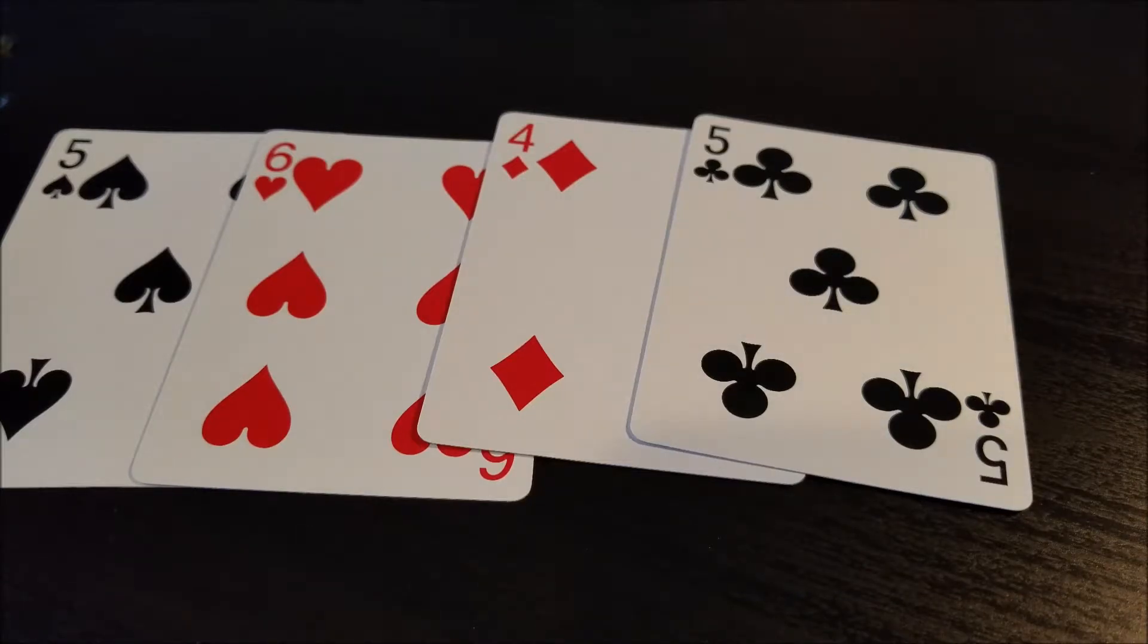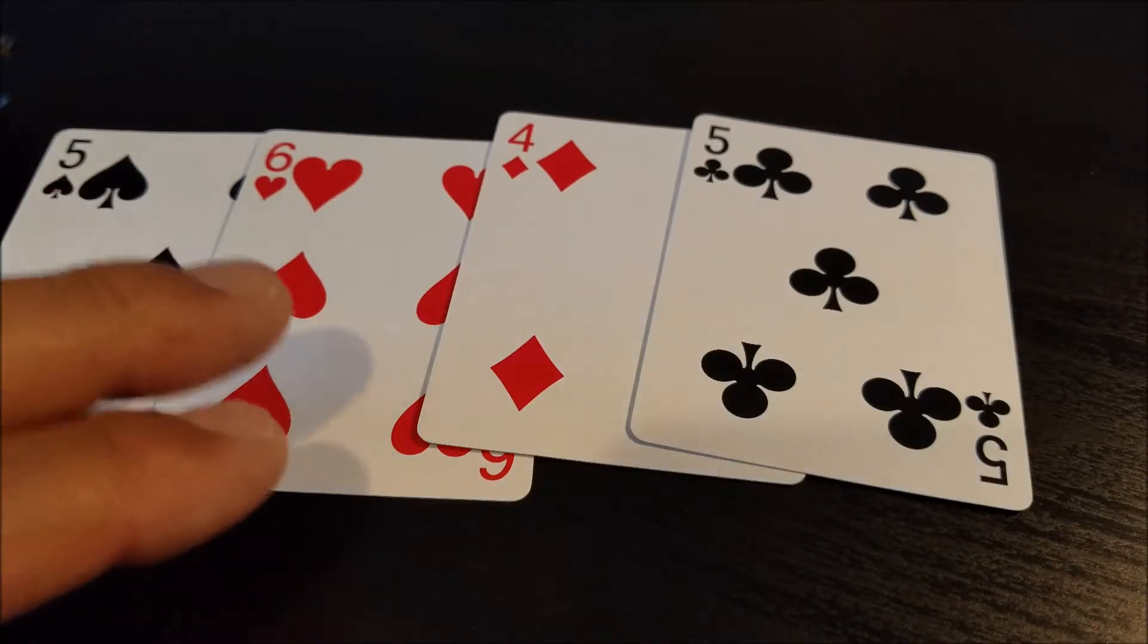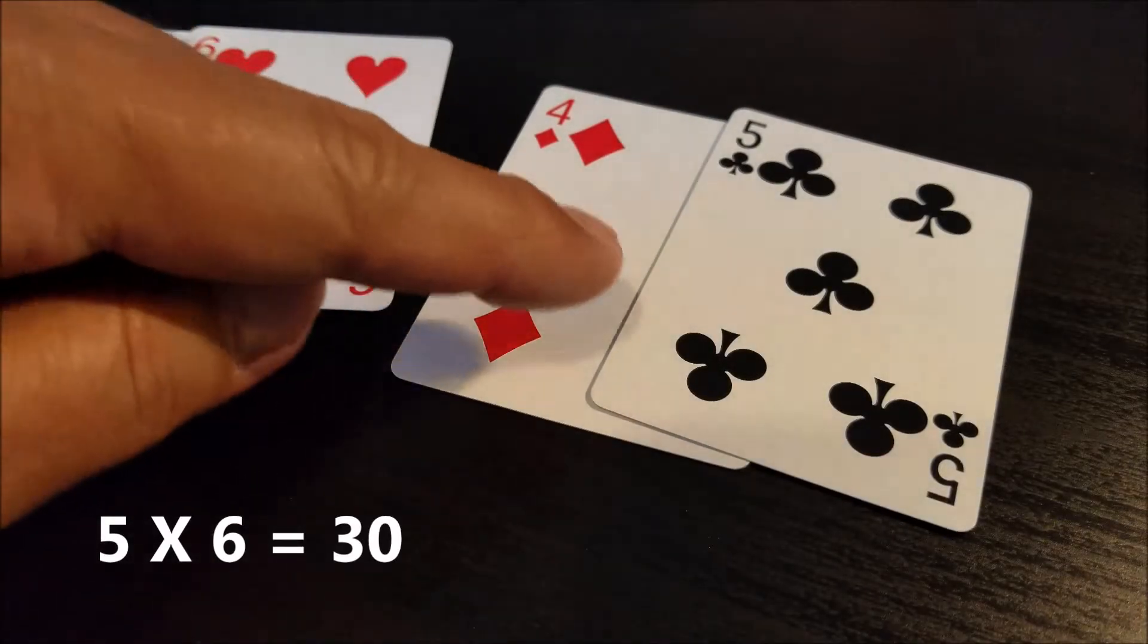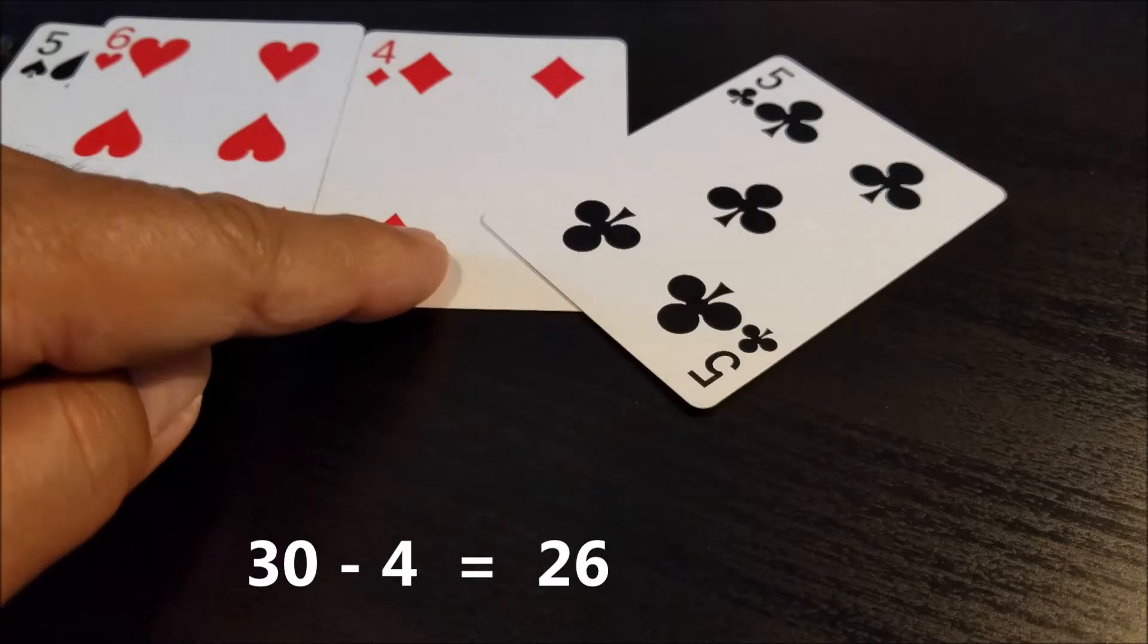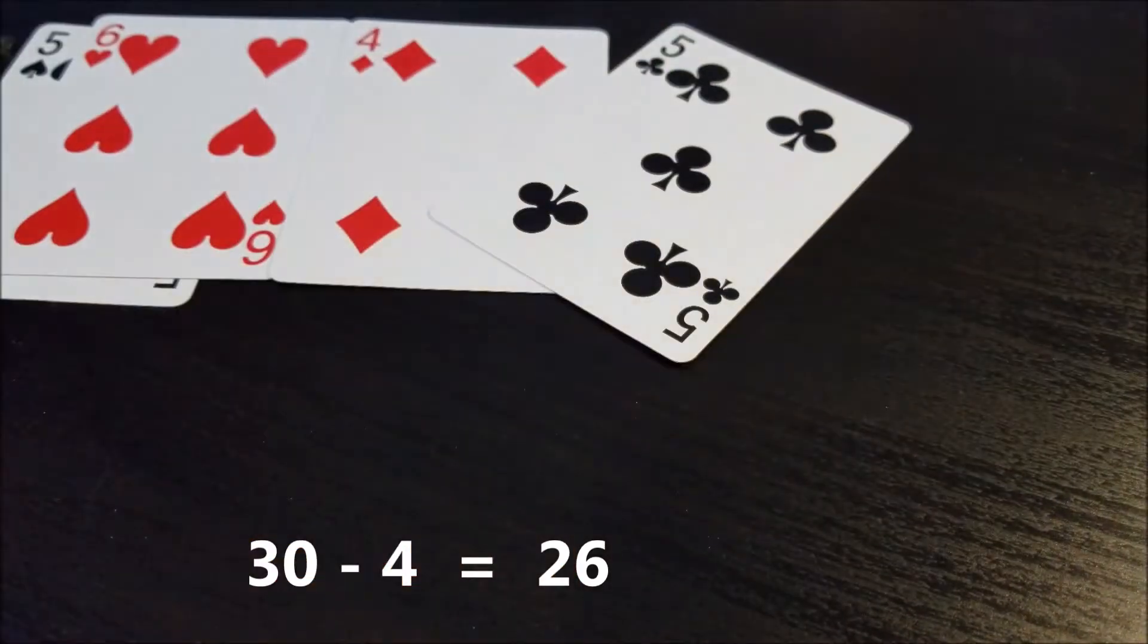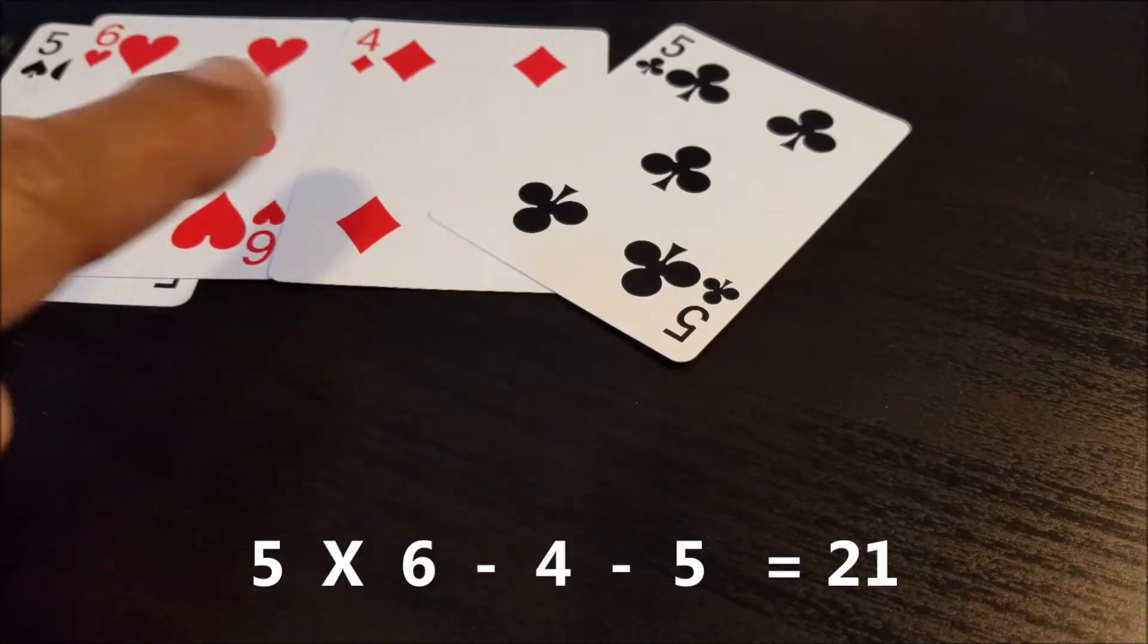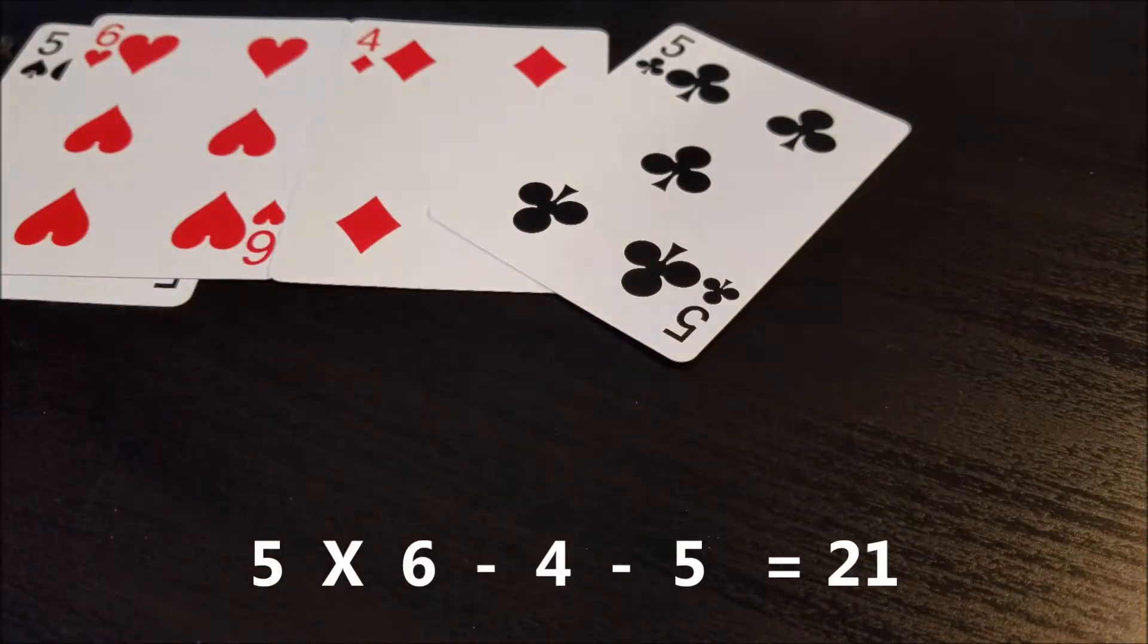So this is how this game could be played and let me just show you one way to get 21. So I can take this five times six that gives me 30. 30 minus four is 26 and 26 minus five is 21. So notice I used multiplication and then subtraction on those last two.